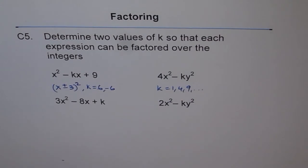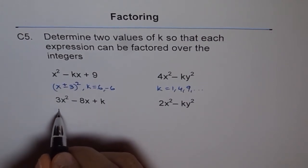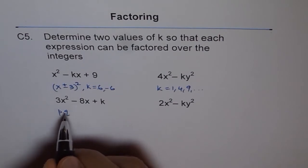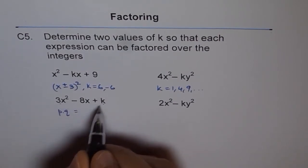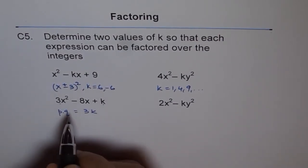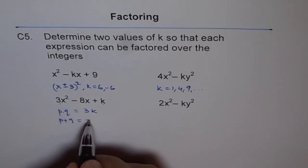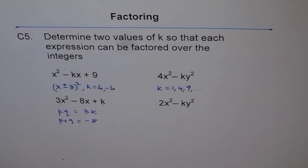How about this one? To factor this, let us go for sum and product rule. We need two numbers like p and q whose product is equal to 3 times k. But whose sum is, when we add p and q, we should get minus 8. So that is what we are looking for.